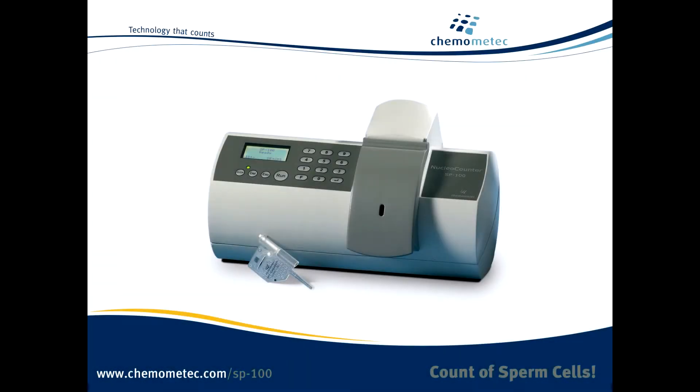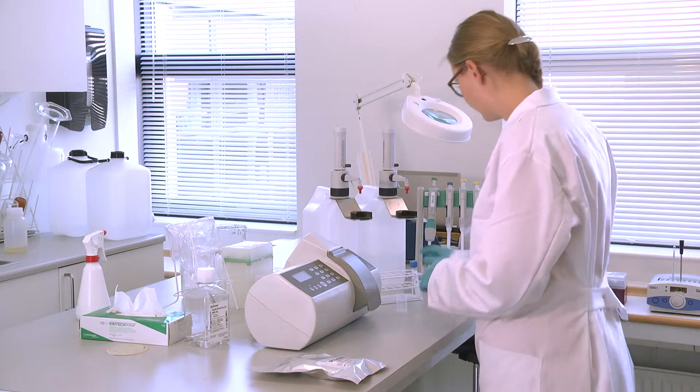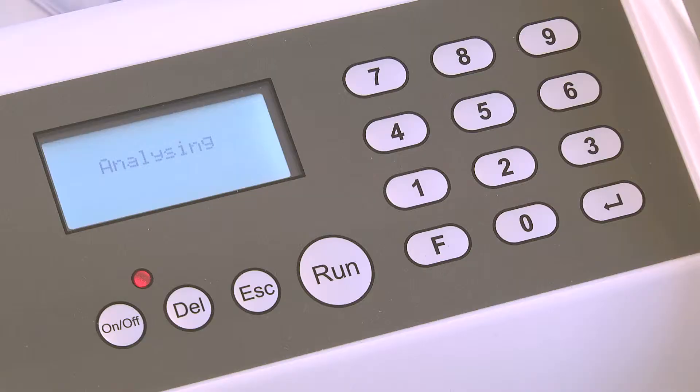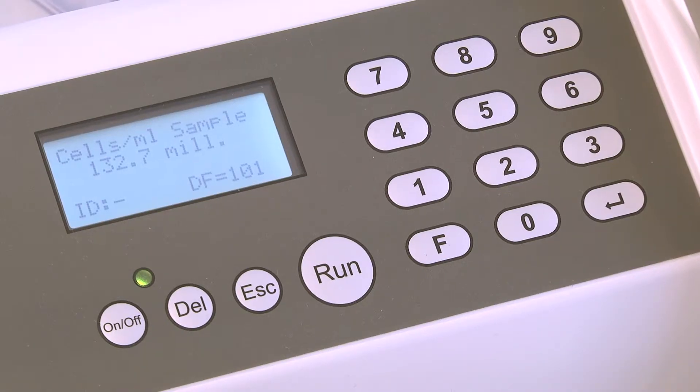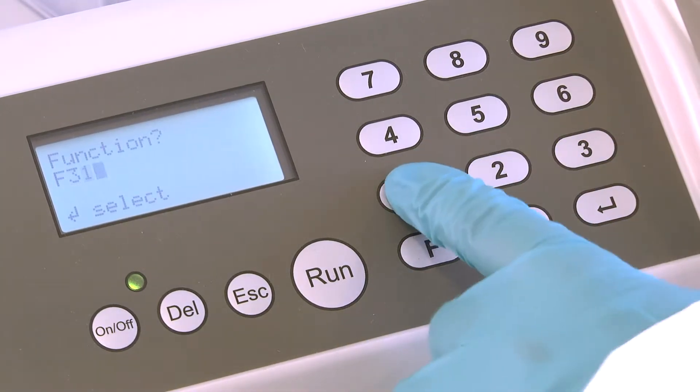The Nuclear Counter SP100 is the world's easiest semen counter. It provides the total sperm cell count in 30 seconds and measures percent viability as well.